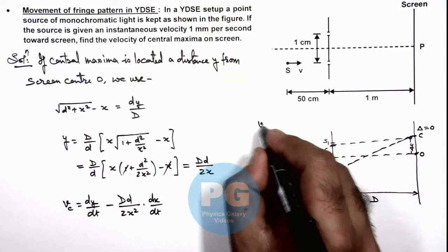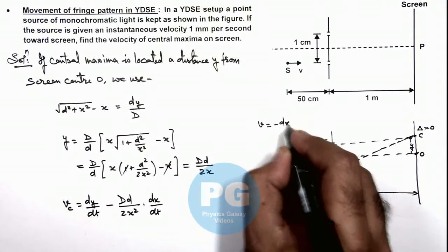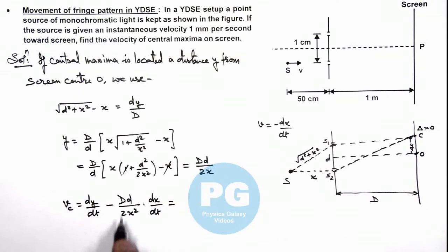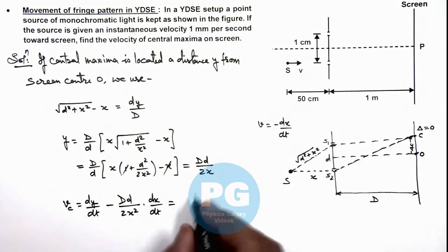And here, as we are given that source is moving toward the slit plane with a velocity v, we can write v equals minus dx by dt. So on substituting the values, minus dx by dt we can write as 1 millimeter per second, and capital D we are given as 1 meter, small d we are given as 0.01 meter.